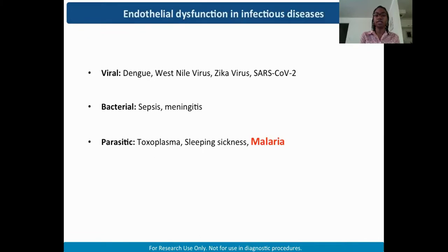The endothelium becomes even more important under disease conditions where it has to appropriately respond to various damaging stimuli. Here are just some examples of infectious diseases where endothelial dysfunction is implicated — various viral, bacterial, and parasitic infections. Several of these diseases have significant morbidity and mortality, and not surprisingly, malaria makes the list.